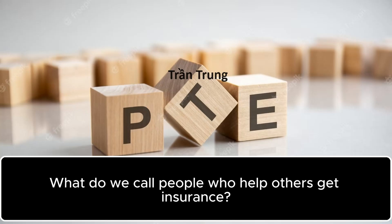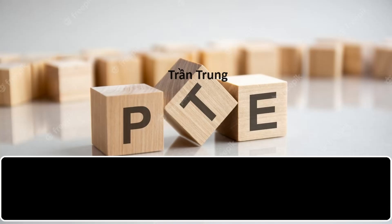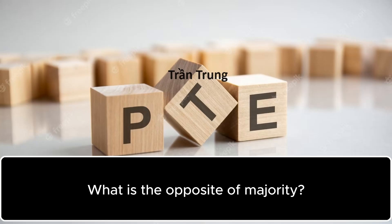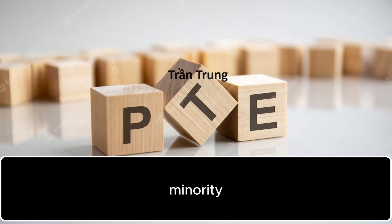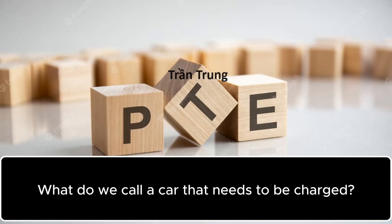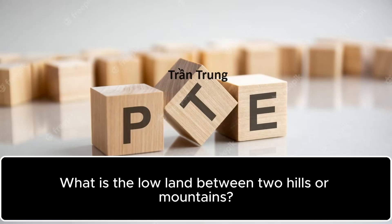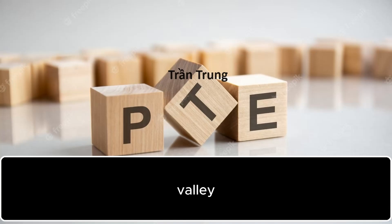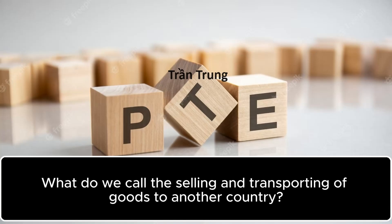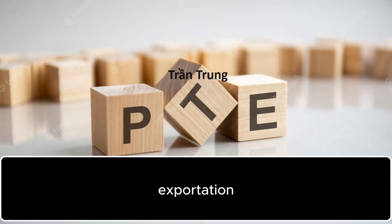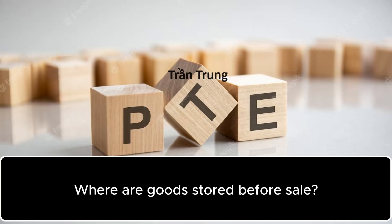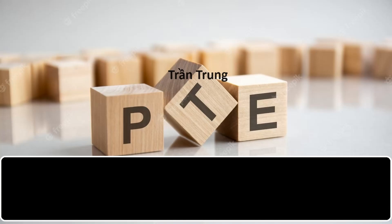What do we call people who help others get insurance? Insurance agents. What is the opposite of majority? Minority. What do we call a car that needs to be charged? Electric car. What is the low land between two hills or mountains? Valley. What do we call the selling and transporting of goods to another country? Exportation. Where are goods stored before sale? Warehouse.